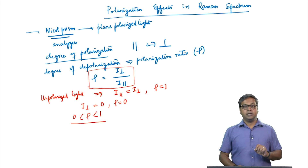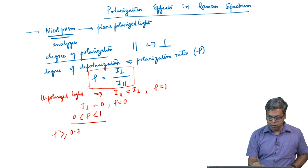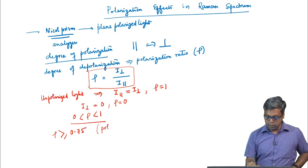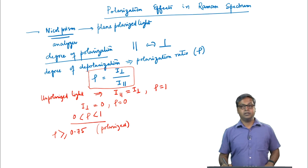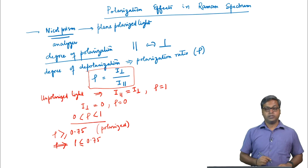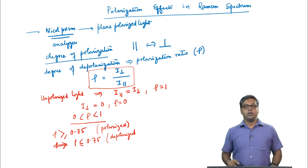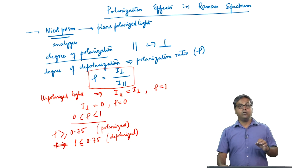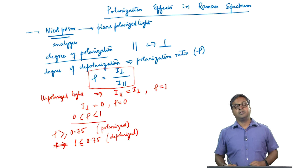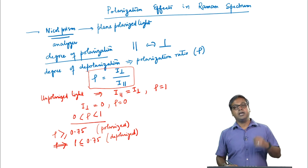Raman lines are classified as polarized if rho is less than or equal to 3/4 (0.75), and depolarized if rho is greater than 0.75. Only symmetric vibrations give rise to polarized lines. By measuring the depolarization ratio, we can distinguish between symmetric vibrational modes and other modes, for example bending modes or asymmetric vibrational modes.